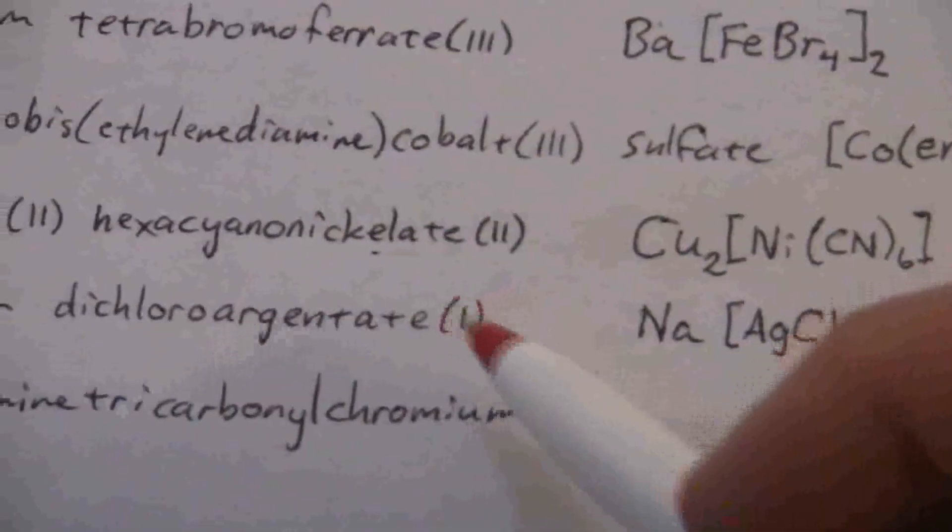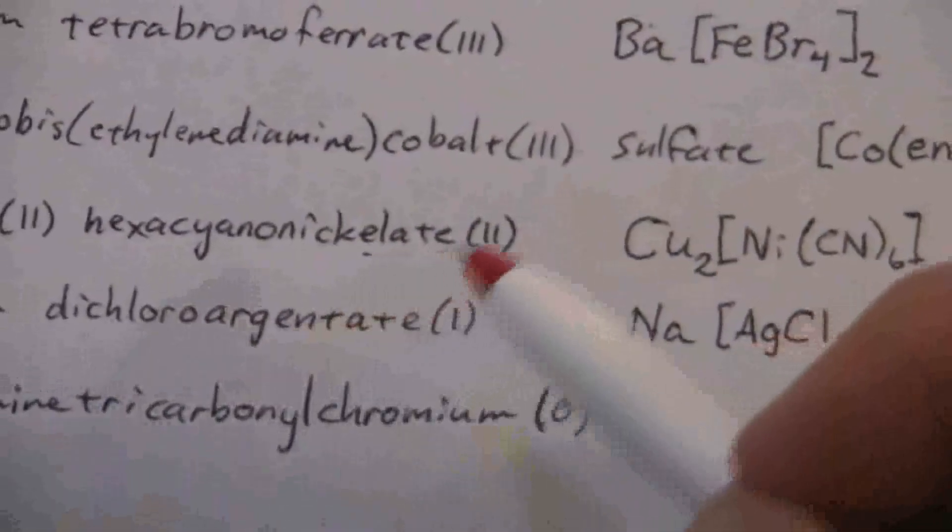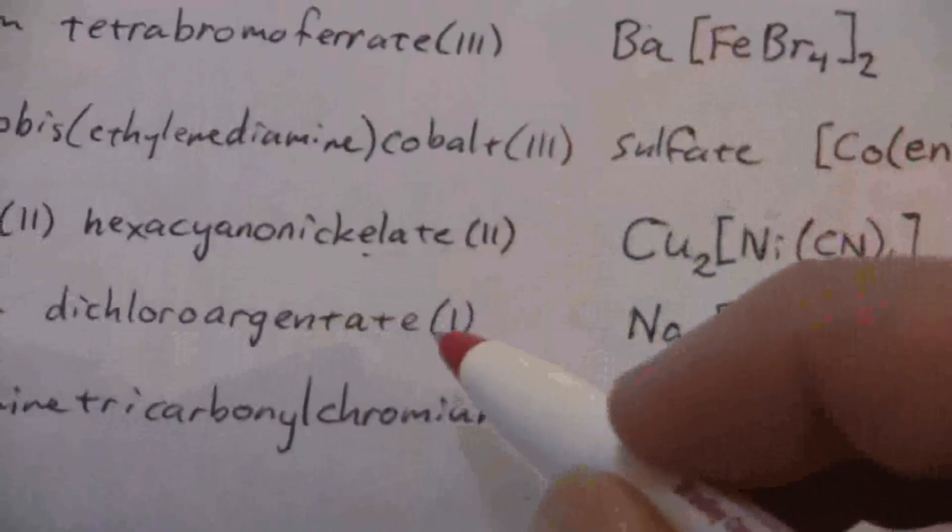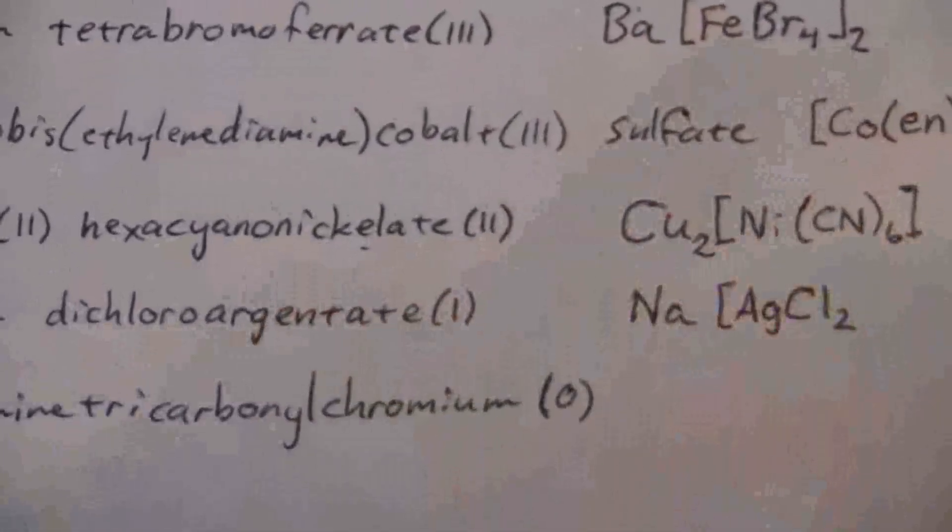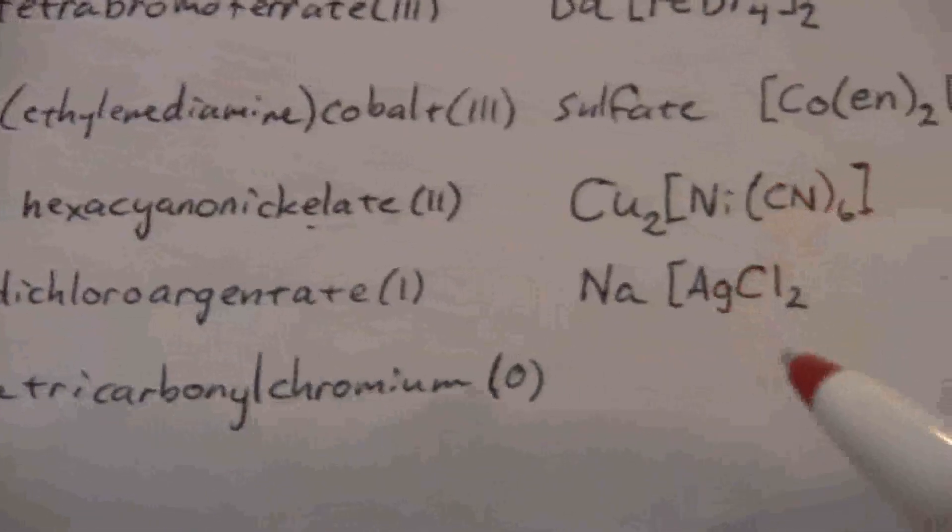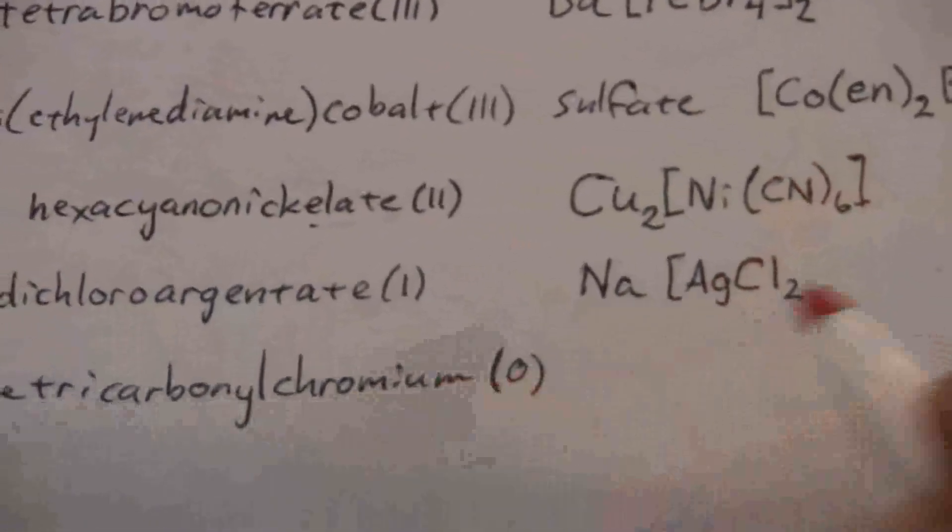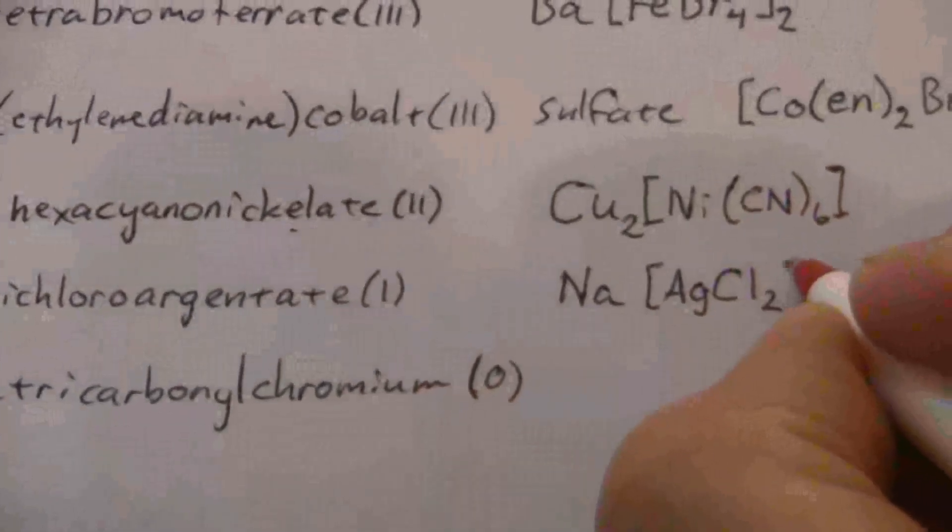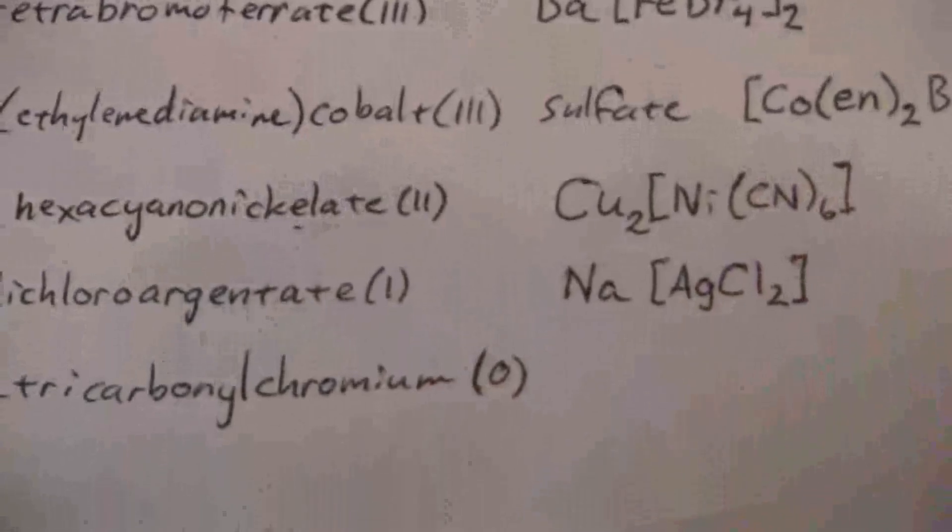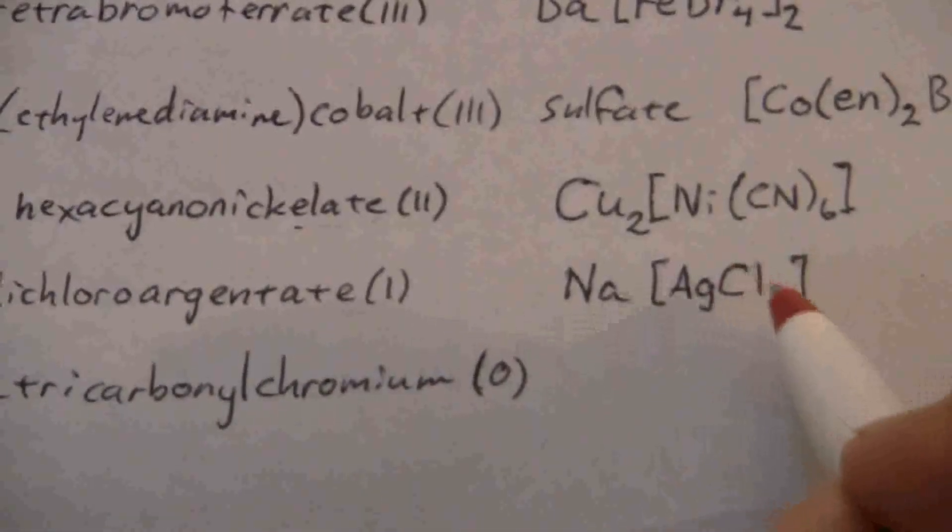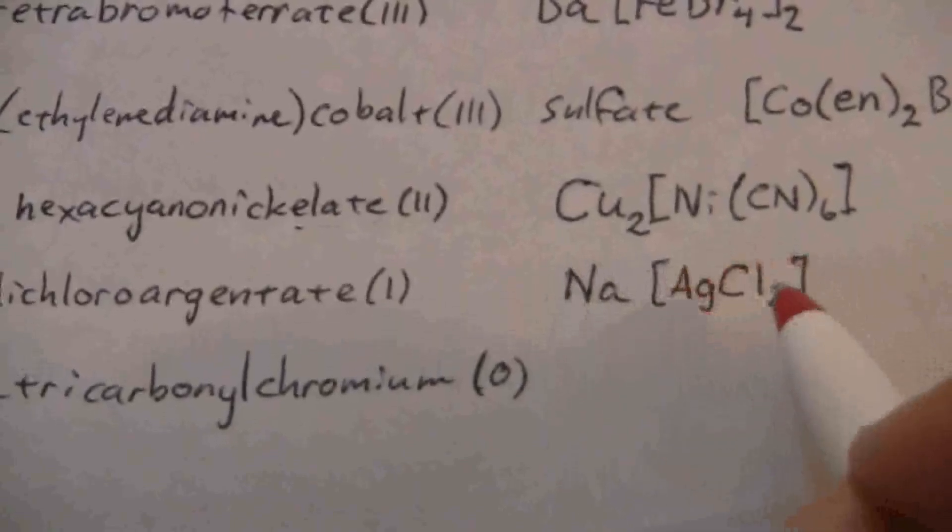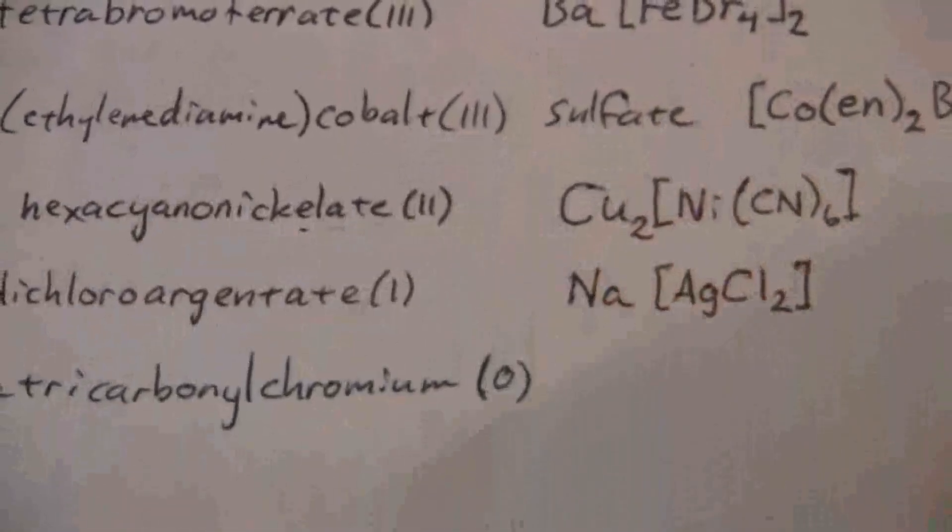And you'll notice, silver is always a positive one, but we write the Roman numeral anyway in the names of complex compounds, coordination compounds. So here we have the positive one, the negative two from the two chlorides, and so that gives us a negative one, so it balances out with just one sodium.